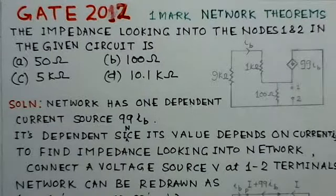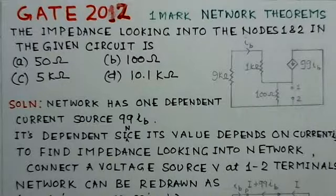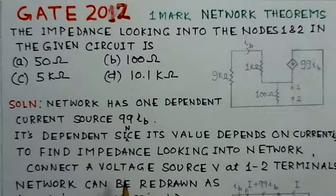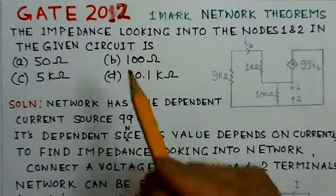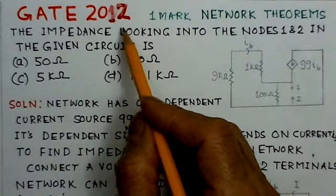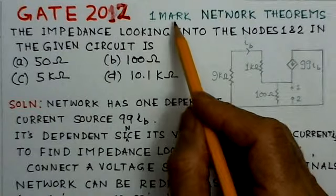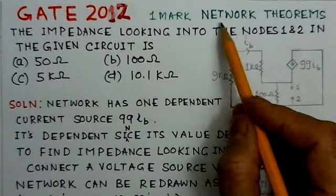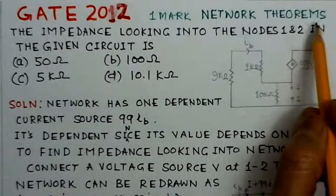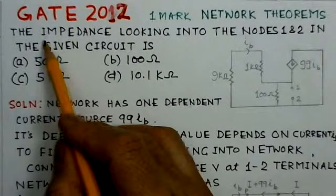This problem is the second problem of the set on network theorems. This problem is from GATE 2012. It is a 1-mark question on network theorems. We will read out the problem here.